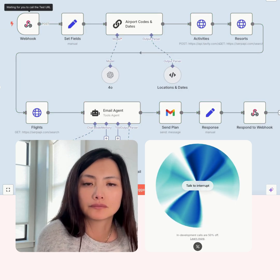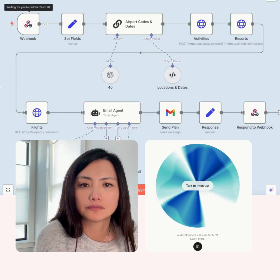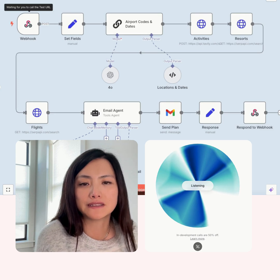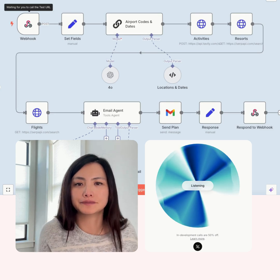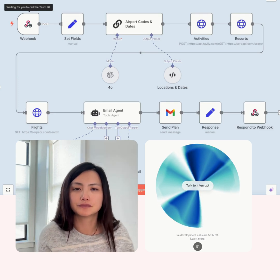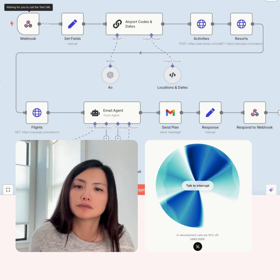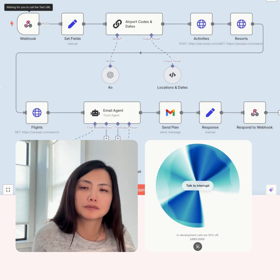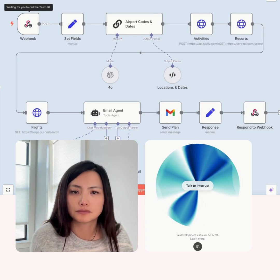Okay, great. The agent asks: And where will you be departing from? I answer: San Francisco. The agent confirms: I've got that you're planning a trip to Los Angeles, departing from San Francisco.